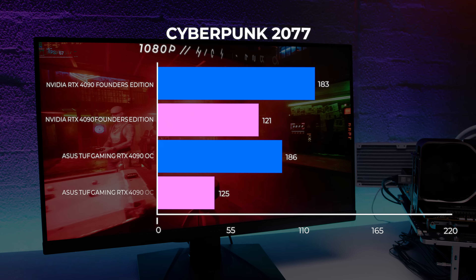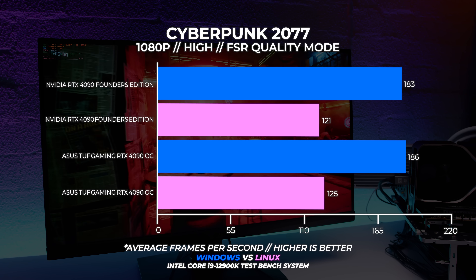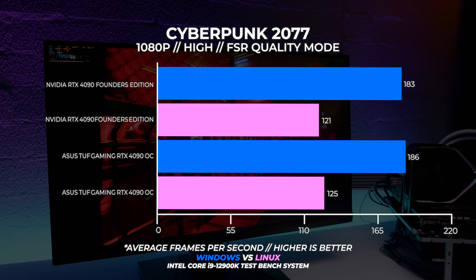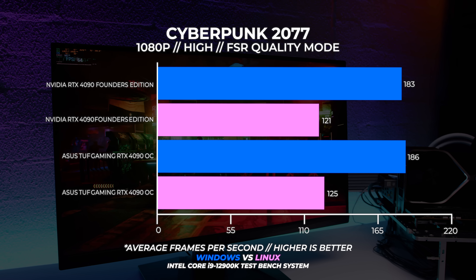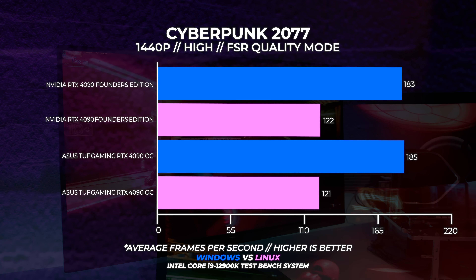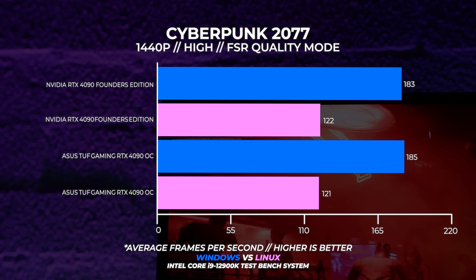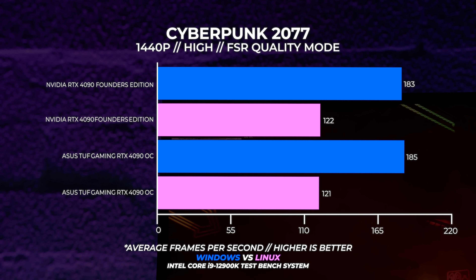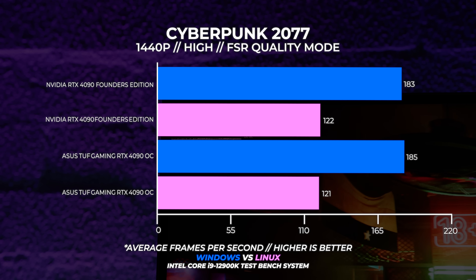At 1080p the Windows performance is much faster than what we're seeing on Linux, and this is mainly to do with using Proton. We don't always see this big a difference in performance with Proton, but it is worth mentioning. At 1440p we're seeing the exact same results, and this is interesting because we actually noticed the Windows performance also being near identical in our 4090 launch content at 1440p — and we're seeing this again in Linux. This must just be a Cyberpunk thing.